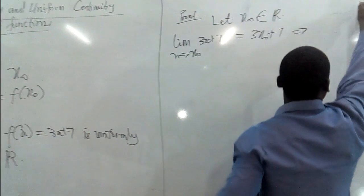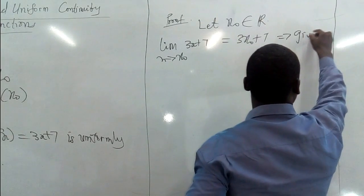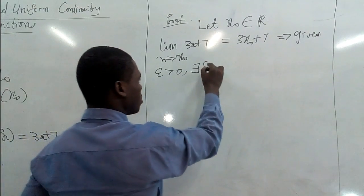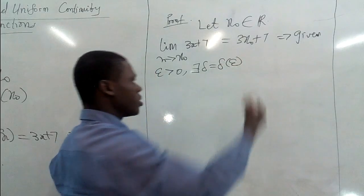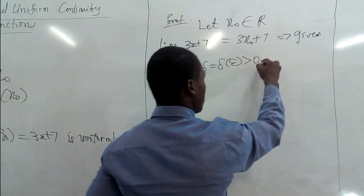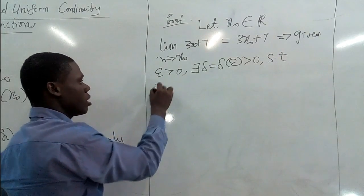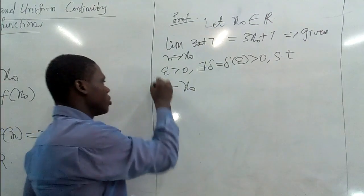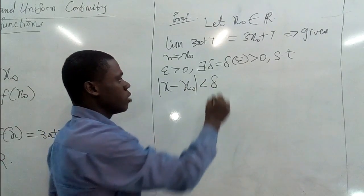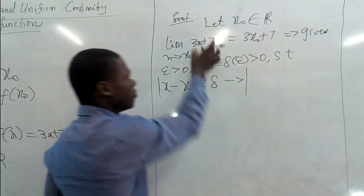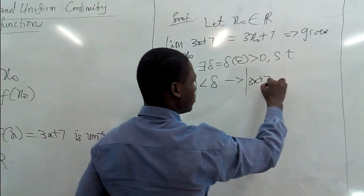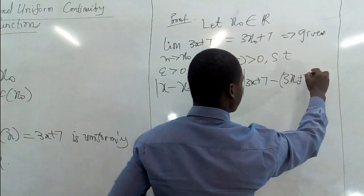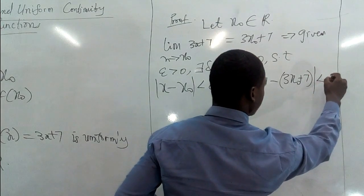So if this is the case, then we have an equivalent statement of this, which is that if we are given any epsilon, so given epsilon positive, there should be a certain delta, which is a function of epsilon greater than 0, such that any time |x - x₀| is less than delta, then we mean that |f(x) - L|, which is |3x + 7 - 3x₀ - 7| should be less than epsilon.